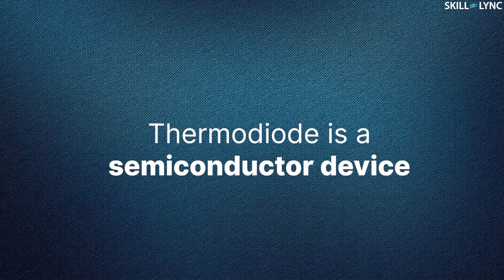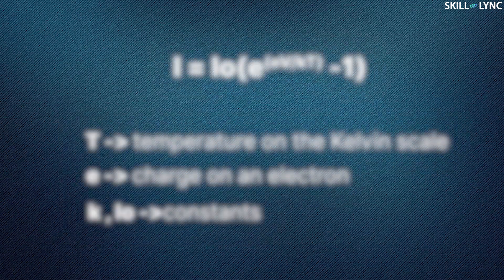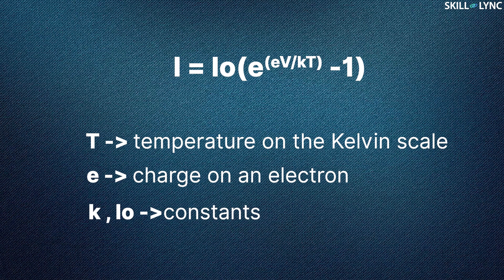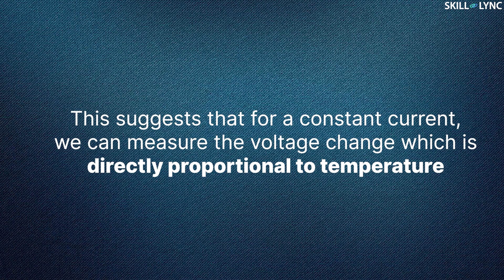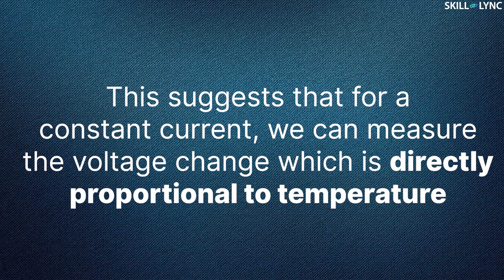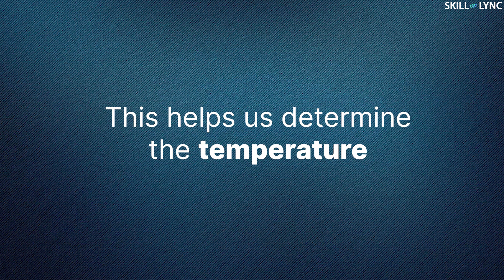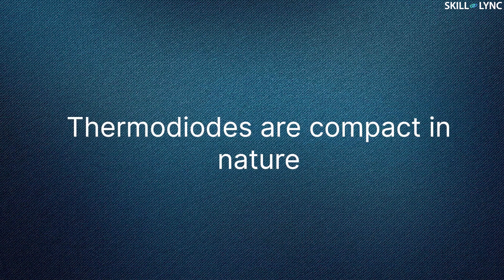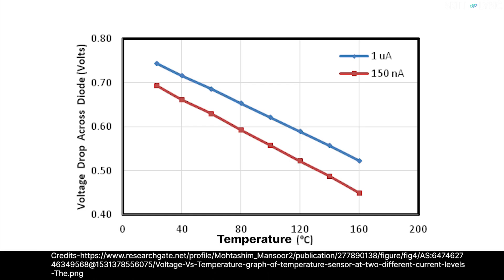The next type of temperature sensor is thermodiodes. A thermodiode is a semiconductor device. A change in temperature in a thermodiode leads to a change in the mobility of the charge carriers, which produces current across the diode. The equation is given here, where T is the temperature on the Kelvin scale, E is the charge on an electron, and K and IO are constants. If the logarithmic value of the voltage is taken, the equation is as shown here. This suggests that, for a constant current, we can measure the voltage change which is directly proportional to temperature, helping us determine the temperature. Thermodiodes are compact in nature and give a graph that is linear in nature.